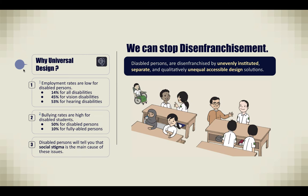Why universal design? We can stop disenfranchisement. Unemployment rates are low for disabled persons — 14% for all disabilities. 45% for vision disabilities and 53% for hearing disabilities. Bullying rates are high for disabled students, five times the rate for fully abled persons, which are at 10% — that's 50% of disabled persons being bullied. Disabled persons are disenfranchised by unevenly instituted, separate, and qualitatively unequal accessible design solutions.